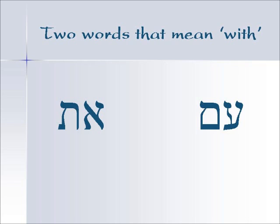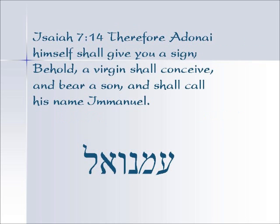Both of them conjugate with personal pronouns. You're probably familiar with the Im meaning 'with' from Isaiah 7:14: 'Therefore Adonai himself will give you a sign. Behold, a virgin shall conceive and bear a son and shall call his name Imanu El.' Im means 'with,' Anu means 'us,' El means 'God' — God is with us.